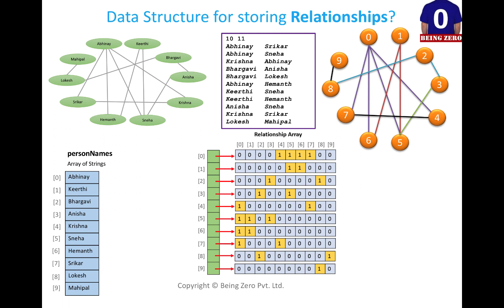The drawback of this data structure is: imagine if this was a graph of 1 lakh people and 5 lakh friendship relationships — we would have wasted a lot of memory just by filling 0s. So can we optimize it a little better?